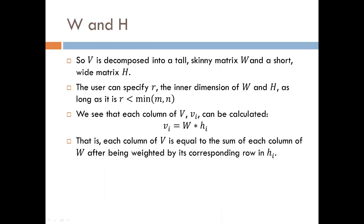Now in other words, we are decomposing V into a tall, skinny matrix and a short, wide matrix, where the inner dimension R is set by the user and is less than the smallest dimension of V. We see that the i-th column of V is calculated by multiplying the entire matrix W by the i-th column of H.